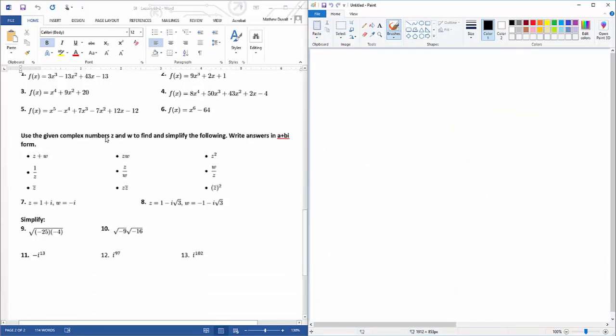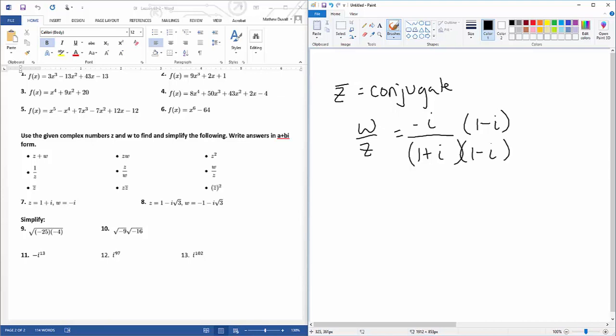It says using given complex numbers z and w to simplify the following. So once again, just reminding you, z bar, that's the conjugate. And whenever, let's say if I have w over z for number seven, w over z, you have to multiply by the conjugate to get the i's out of the denominator, and then you'd have to distribute, distribute, and be able to simplify that.